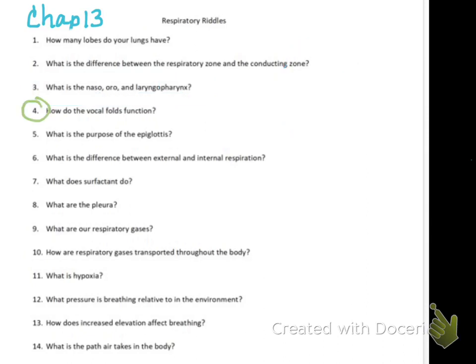Next question: how do the vocal folds function? Vocal folds is another term for vocal cords. If you look down somebody's throat toward the trachea opening, there are loose connective tissue folds right there - those are the vocal folds. As air rushes by them, they vibrate, stretch, thin, and move, and that's what helps us create sound or speech.